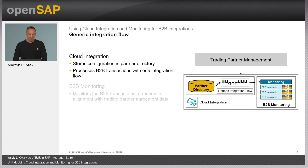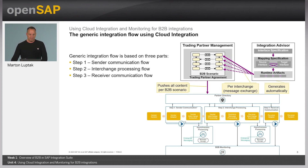Cloud integration is responsible to hold and dynamically process the configured B2B scenario transactions with one integration flow. It is also designed to include source and target interchange B2B formats supported within trading partner management. The generic integration flow using cloud integration is designed to hold B2B formats from integration advisor as well as to process the whole configuration designed in trading partner management. The generic integration flow is based on three parts.